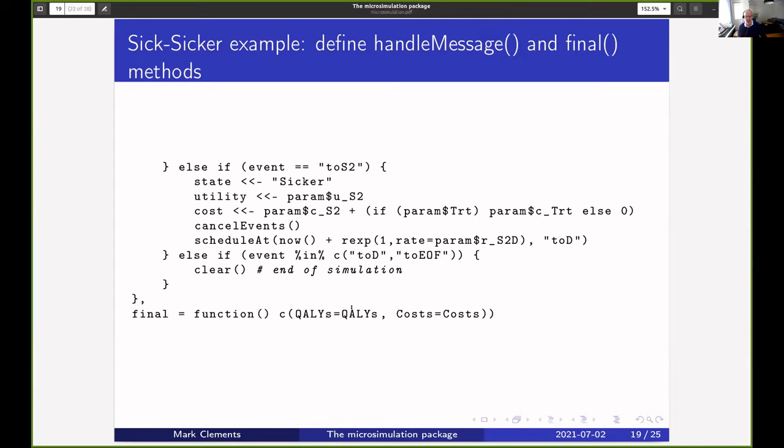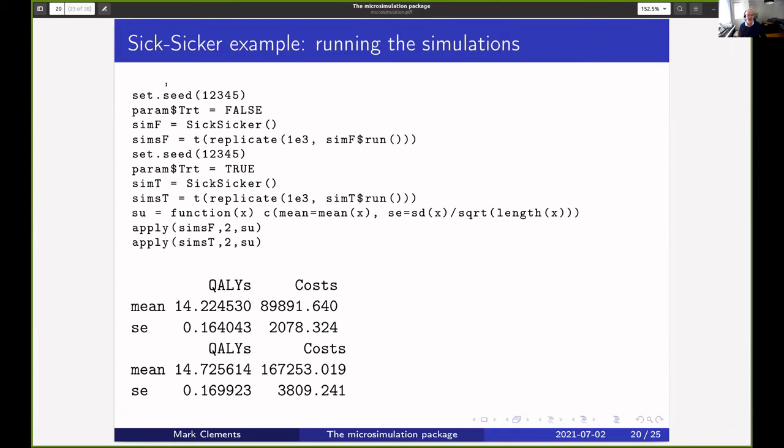Then we've got a final method where we just basically want to get out the cumulative QALYs and the costs. So to run this we set the seed, we say that they're not going to be treated, we set up the model, and then we run the model a thousand times. Then we change it so they are being treated, run the model, and then all I've shown here is just the means for those that are untreated and the means and standard errors for those that are treated. I could have done a lot more with that.